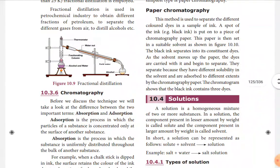Chromatography is based on the principle of absorption and adsorption. Paper chromatography is used to separate different dyes — for example, from black ink, because black ink contains three different dyes.